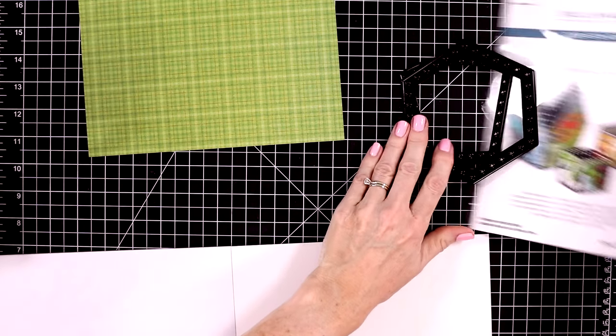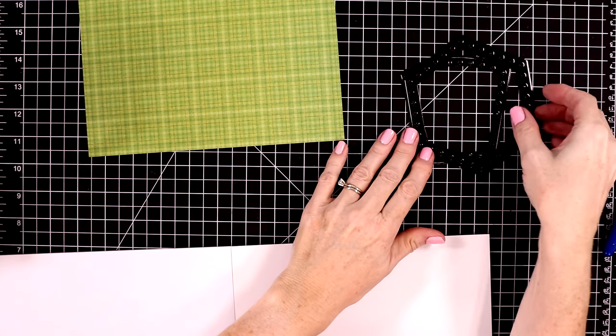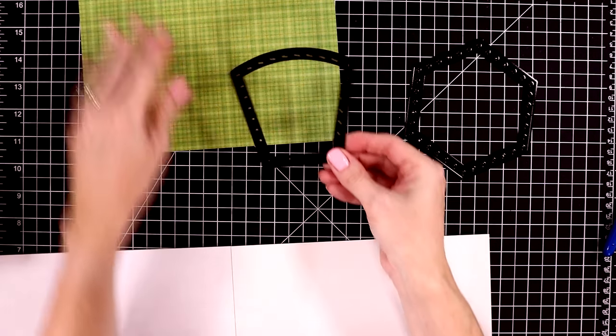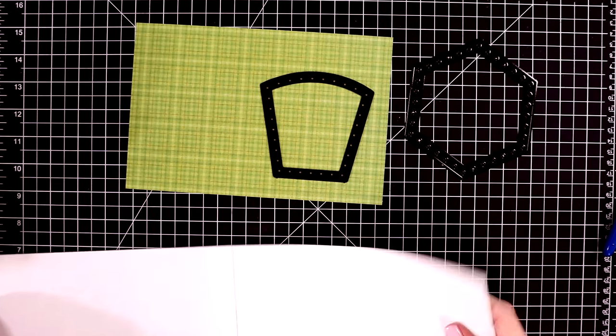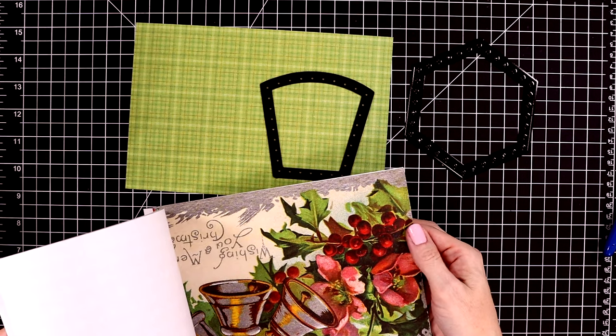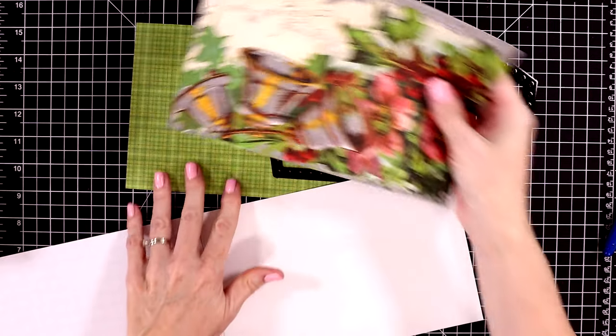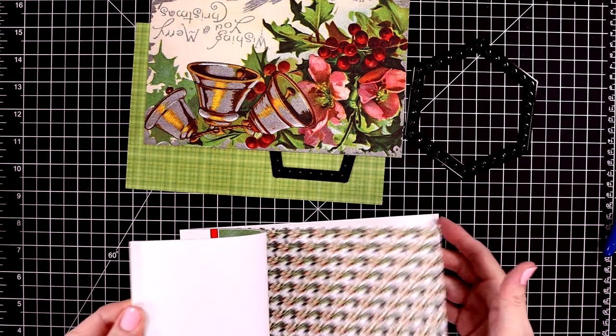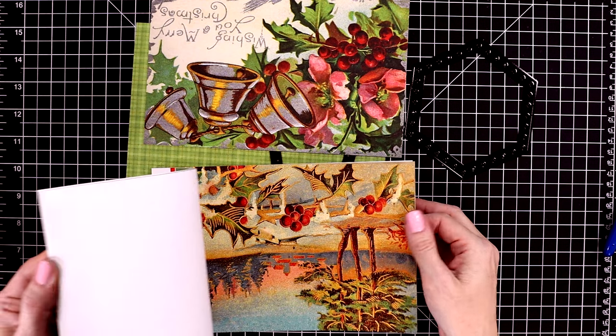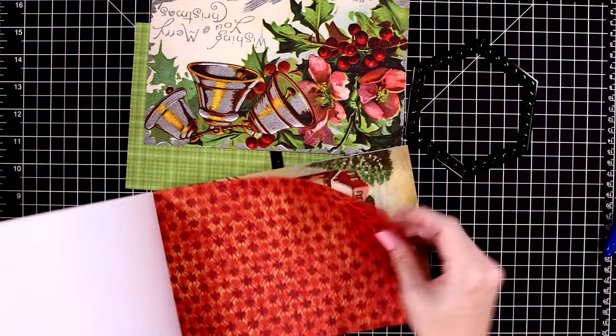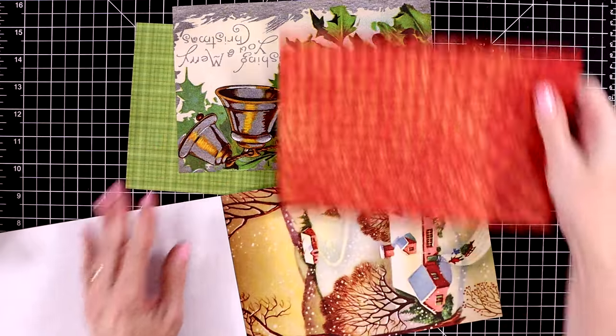So I'm going to go ahead and pick out the patterns that I want to use for this bowl. And because these pattern papers are so lightweight, I'm going to cut out some of the Spellbinders essential cardstock colors to glue the pattern paper onto. So we'll need six pieces cut out from this smaller die, and of course all of the pattern papers in this pad coordinate just beautifully together.